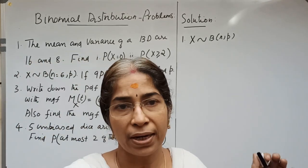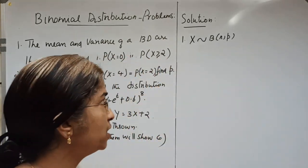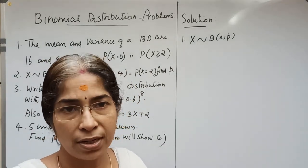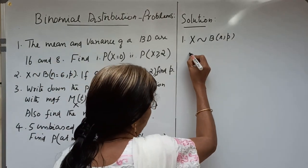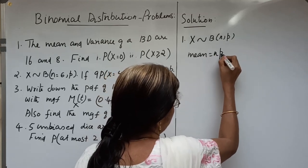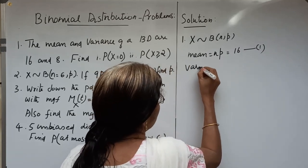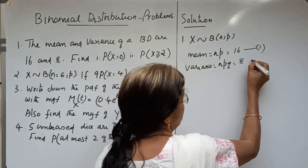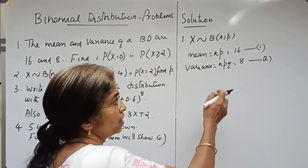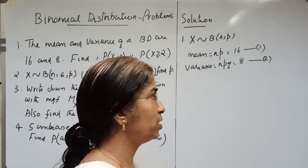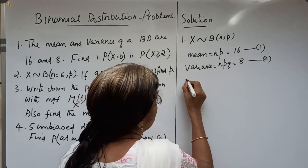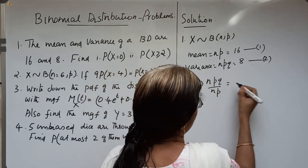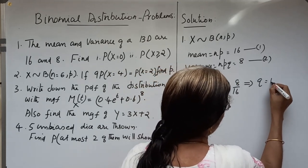In order to find the PDF F(X) of binomial distribution, we need to estimate the two parameters N and P. We are given mean equal to NP equal to 16, and variance equal to NPQ equal to 8. Dividing equation 2 by equation 1, NPQ divided by NP equals 8 divided by 16, giving Q equal to 1/2.